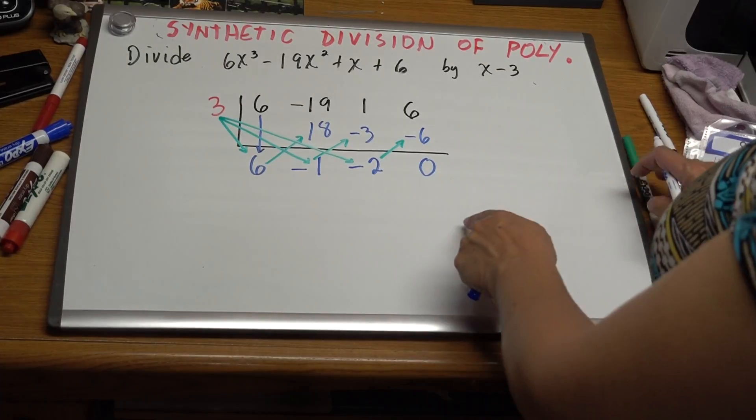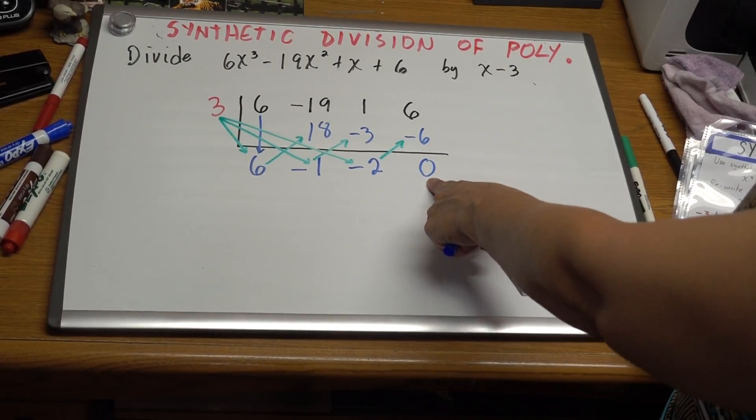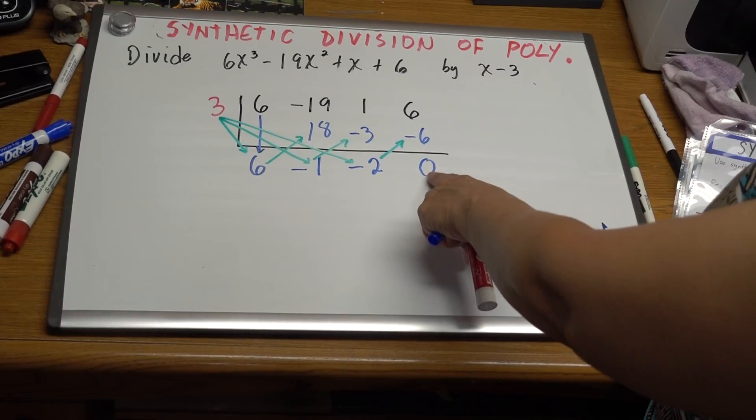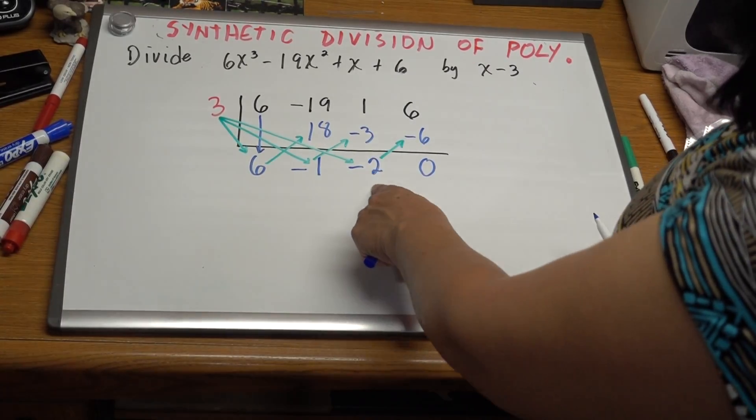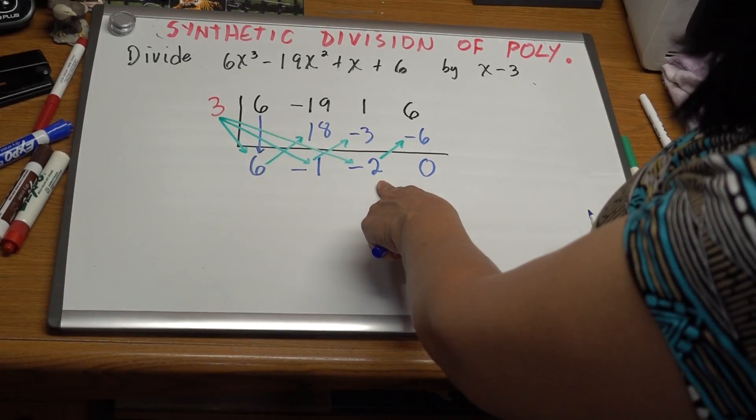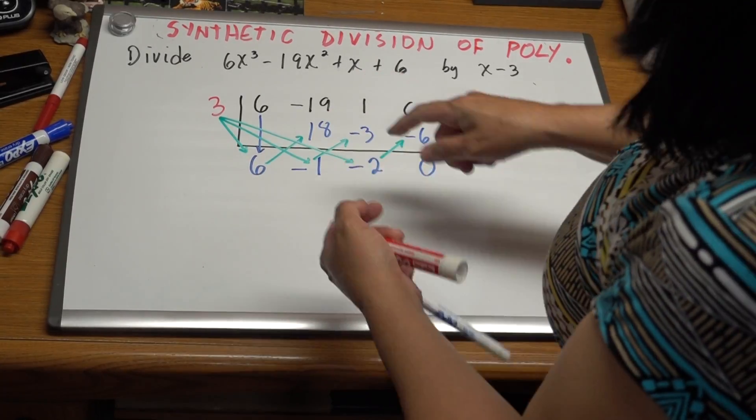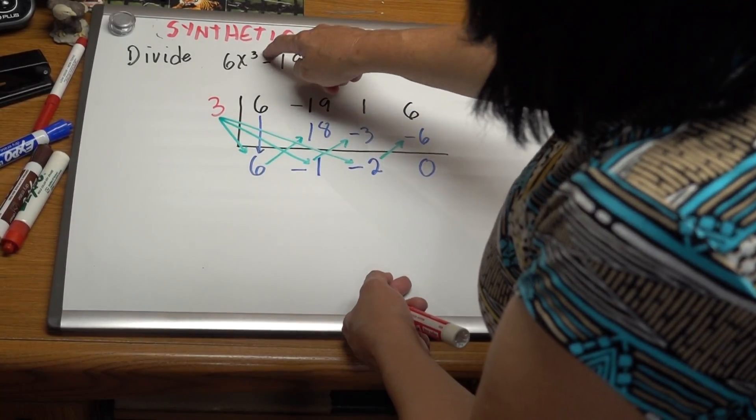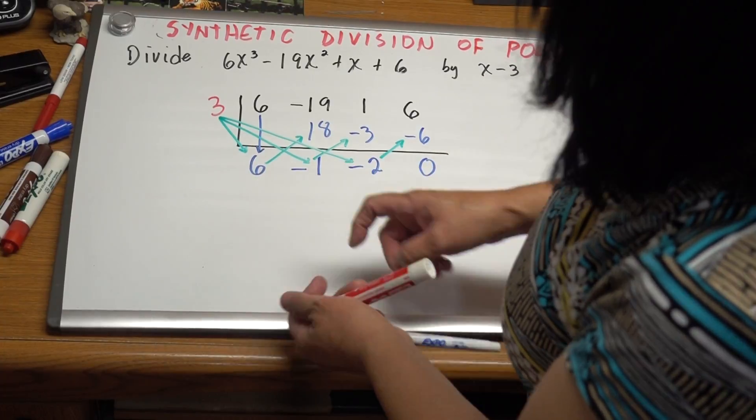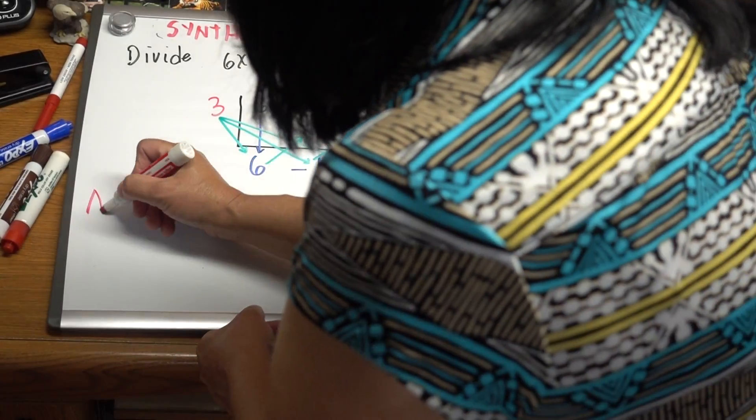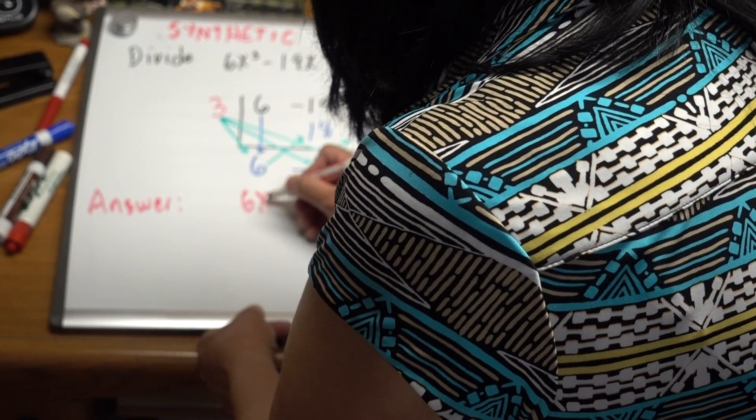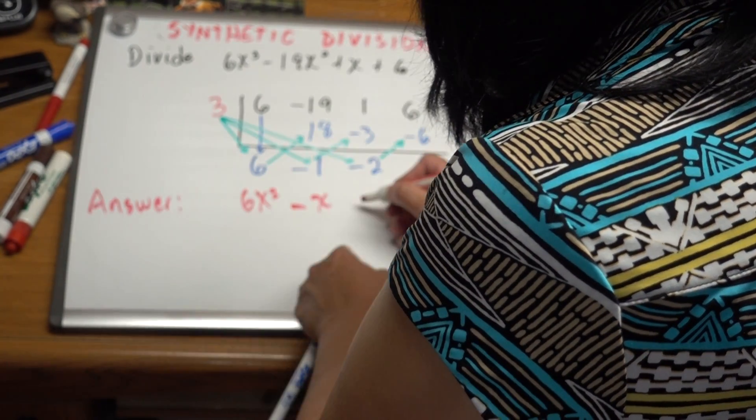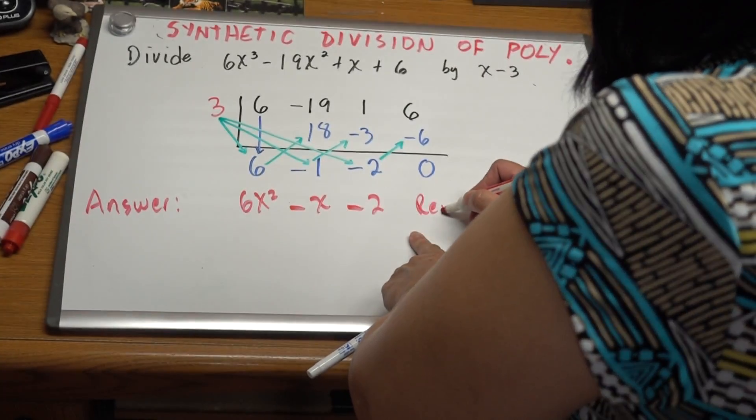What we have here is the last number, which is the remainder of the division. So the remainder of the division is 0. And these are the coefficients of the quotient, which in this case, since this is x², x³, now this is going to be 6x². So the answer is going to be 6x² - x - 2, and the remainder is 0.